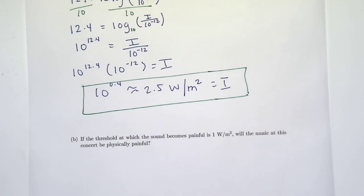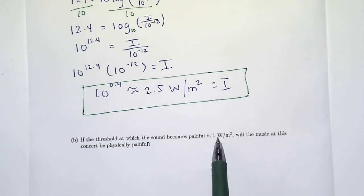it says, If the threshold at which the sound becomes painful is 1, so threshold. Remember what's supposed to represent the threshold in W over meter squared, so think about that. Will the music at this concert be physically painful?